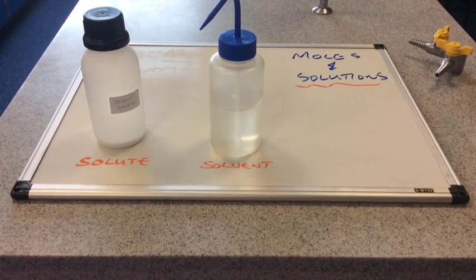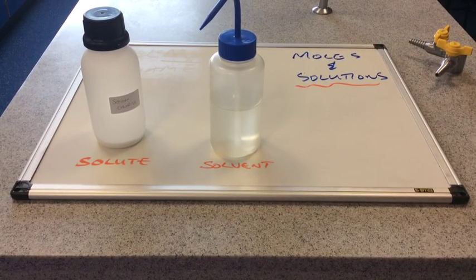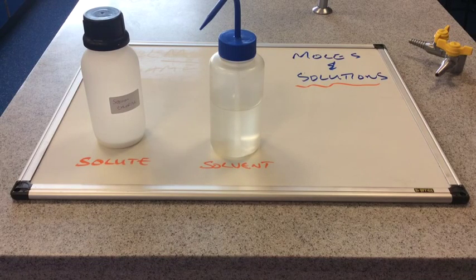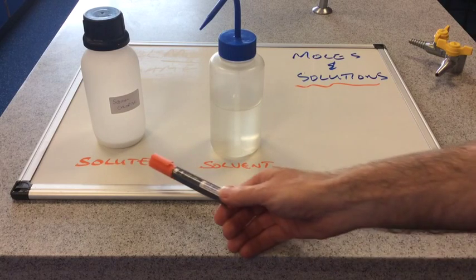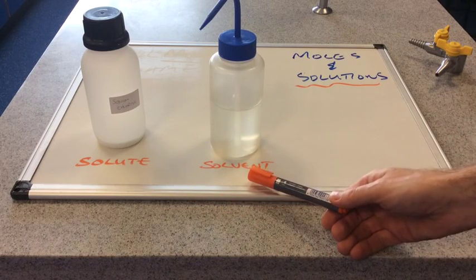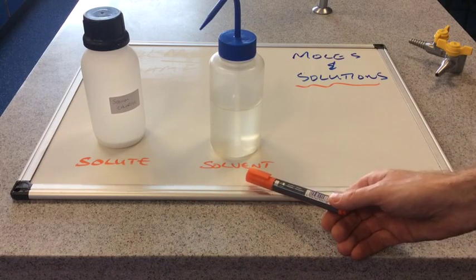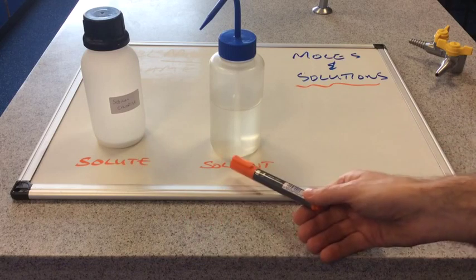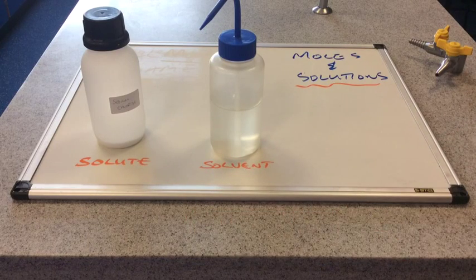In this video I'm going to look at moles and solutions. The first thing we'd better explain is what is a solution. A solution is formed when you take something called a solute and you mix it with a solvent, and what happens is the solute dissolves in the solvent and forms what's known as a solution. I'm going to do exactly that.